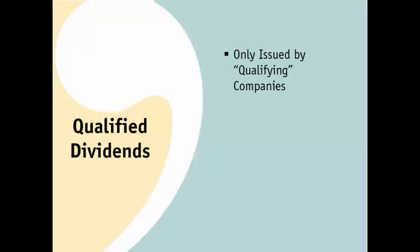Only U.S. and certain foreign companies can issue qualified dividends. Only certain types of dividends are qualified. Dividends from money market accounts are usually not, and neither are dividends from REITs. There is also a holding period requirement: you need to have owned the stock paying the dividend for more than 60 days during the 121 days that begins 60 days before the ex-dividend date.